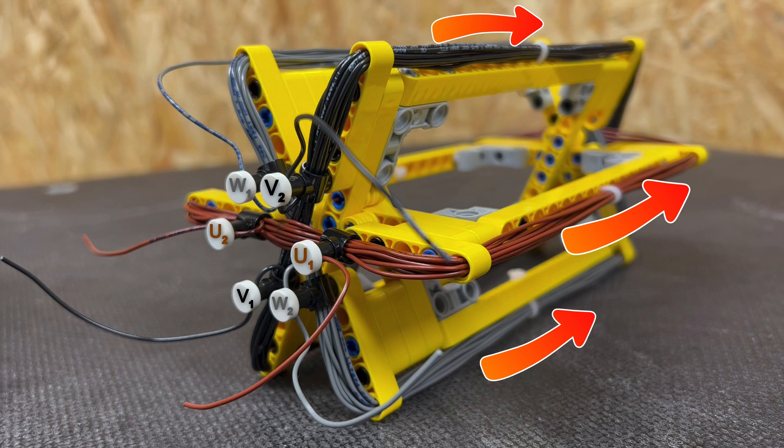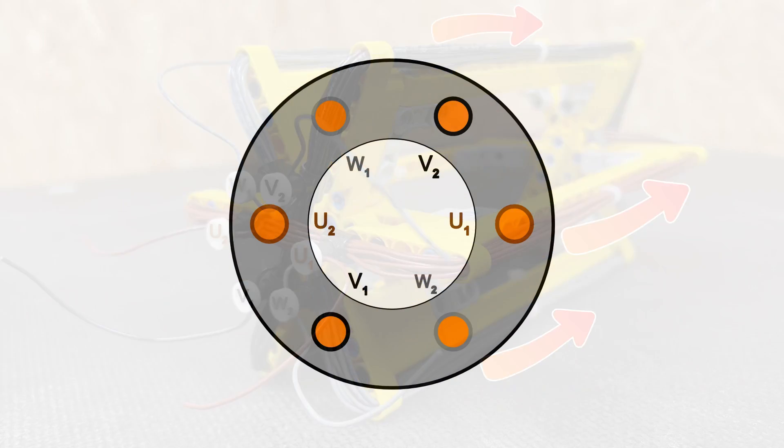So now we know the direction of the current in each coil if we take a cross section of the motor we can represent the current flowing in each group of conductors. Here the current is going away from us and so we represent that with a cross and here it's flowing towards us which we represent with a dot.